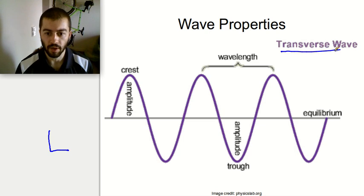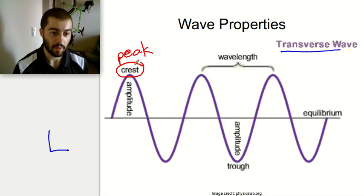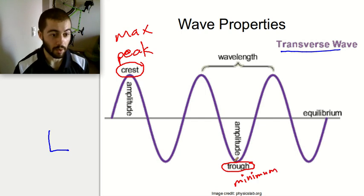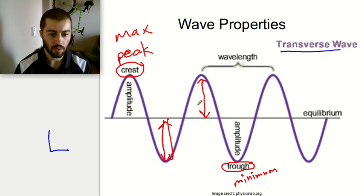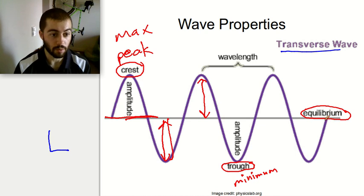Here's an example of a transverse wave with some important vocabulary. When a wave comes to a peak, that's called a crest, or you could also call it a peak or maximum. The opposite — at the bottom — would be a trough or minimum. Another property is amplitude: the amplitude is how high up and how low down the wave goes from the baseline. That baseline or neutral position is called equilibrium — it's where the wave is not displaced.